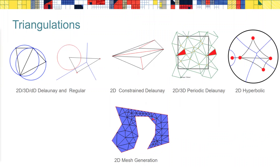Constrained triangulations respect input segments, here drawn in red. This is used to triangulate polygonal domains and needed for Delaunay meshing in 2D. We do not yet have 3D constrained triangulations in CGAL. Periodic triangulations live in a unit domain and triangles on the border wrap around, so this triangle is identical to that one — it only exists once. For periodic triangulations we have users in astrophysics and are aware of plenty of publications in material science. Hyperbolic triangulations live in the hyperbolic plane, here represented as a Poincaré disk, where a line is an arc of a circle orthogonal to the disk.